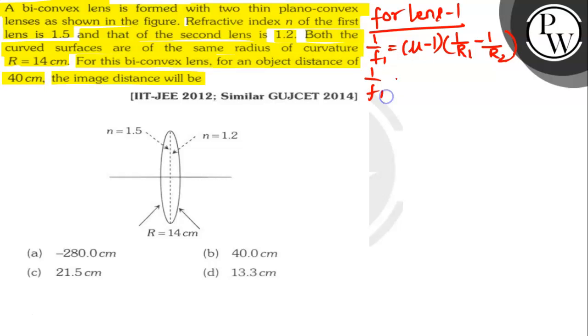So 1 by f1 equals 1.5 minus 1 into 1 by 14 minus 0. So here 1 by f1 equals 0.5 by 14.